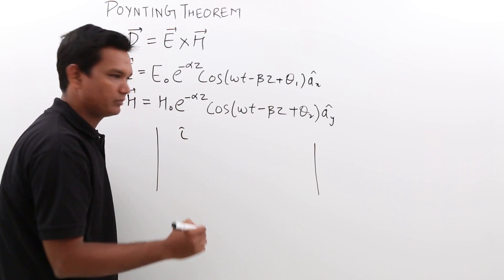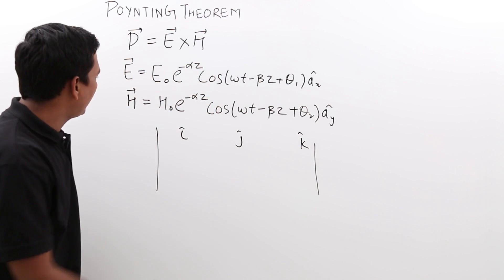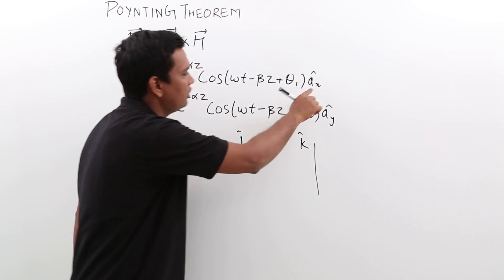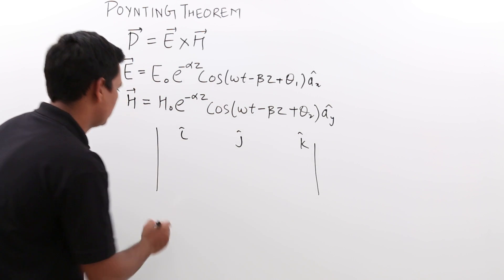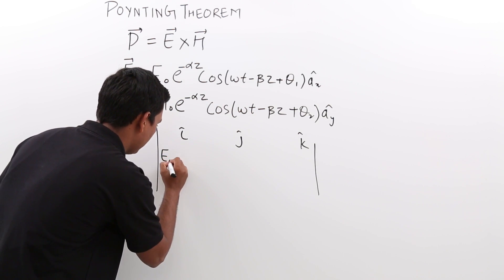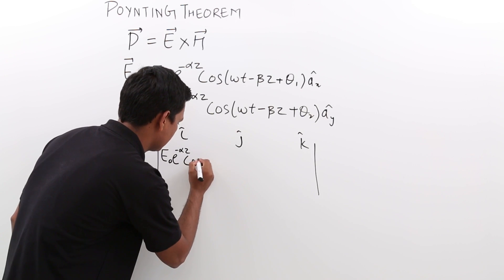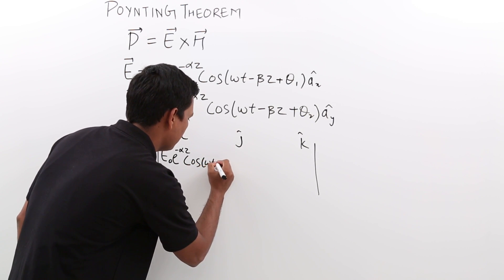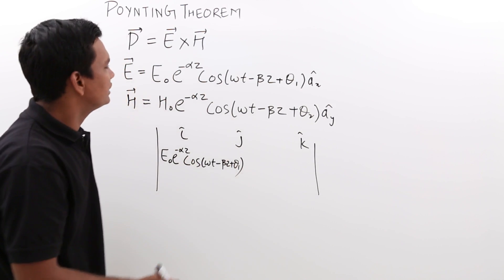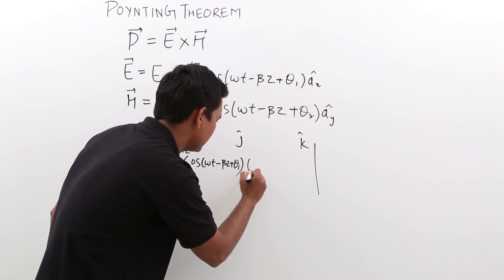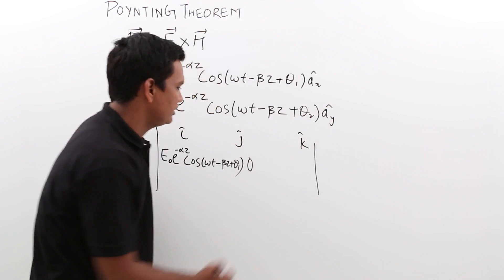Setting up the cross product determinant with i-cap, j-cap, k-cap: the electric field has only a component along i-cap, which is E-naught e to the power minus alpha-z cos(omega-t minus beta-z plus theta-1). The j-cap component is 0, and the k-cap component is also 0.